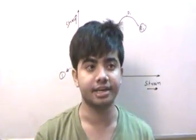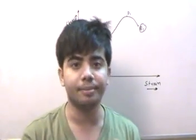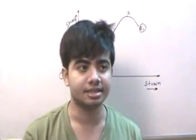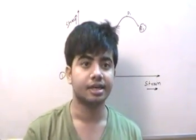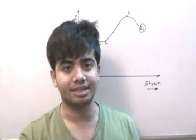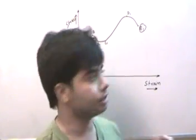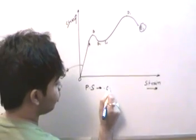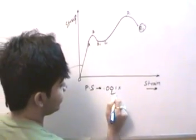To find the proportional limit, the International Congress for Testing Materials has taken an assumption that if there is a permanent set of 0.001 percent, then this point is called the proportional limit. This is how we can find point A.